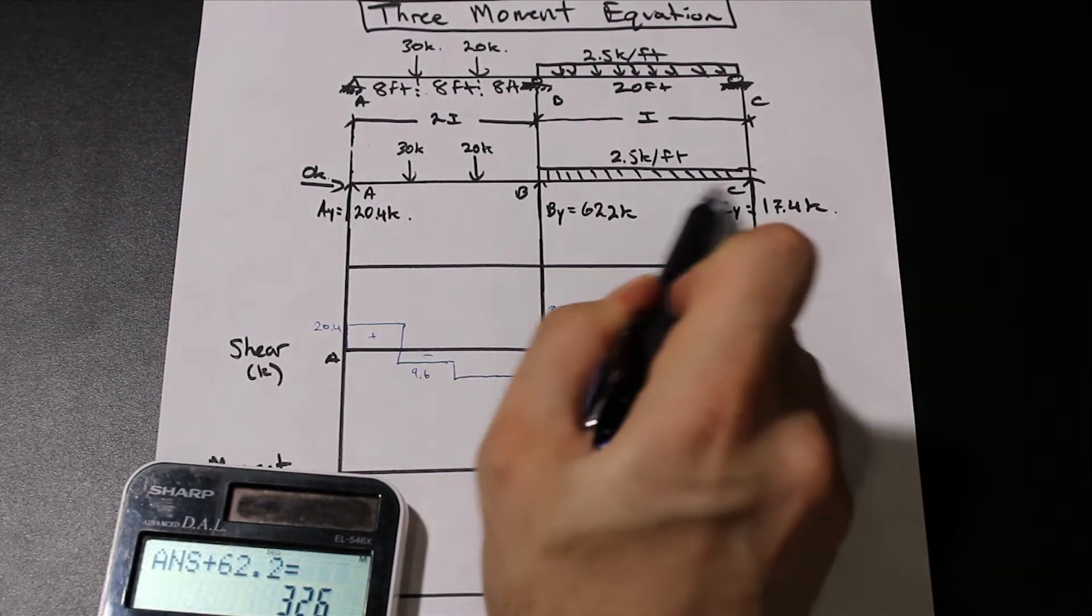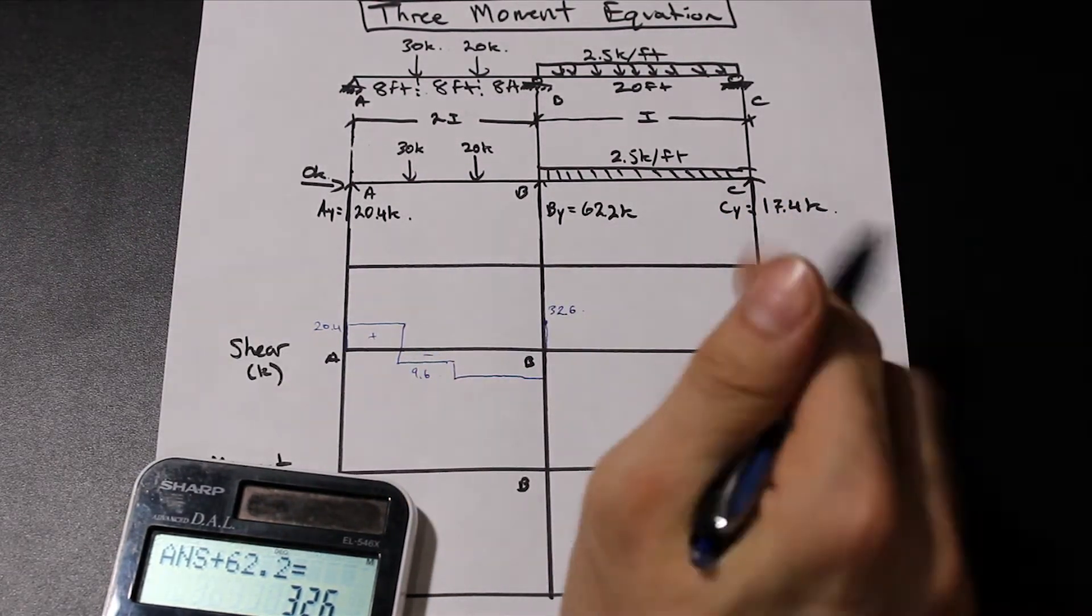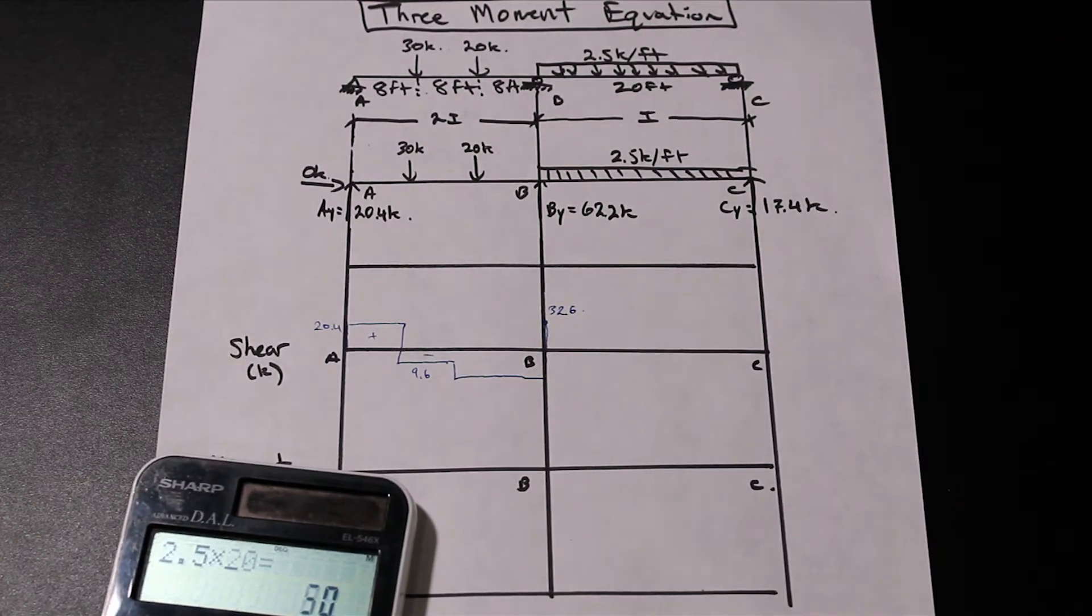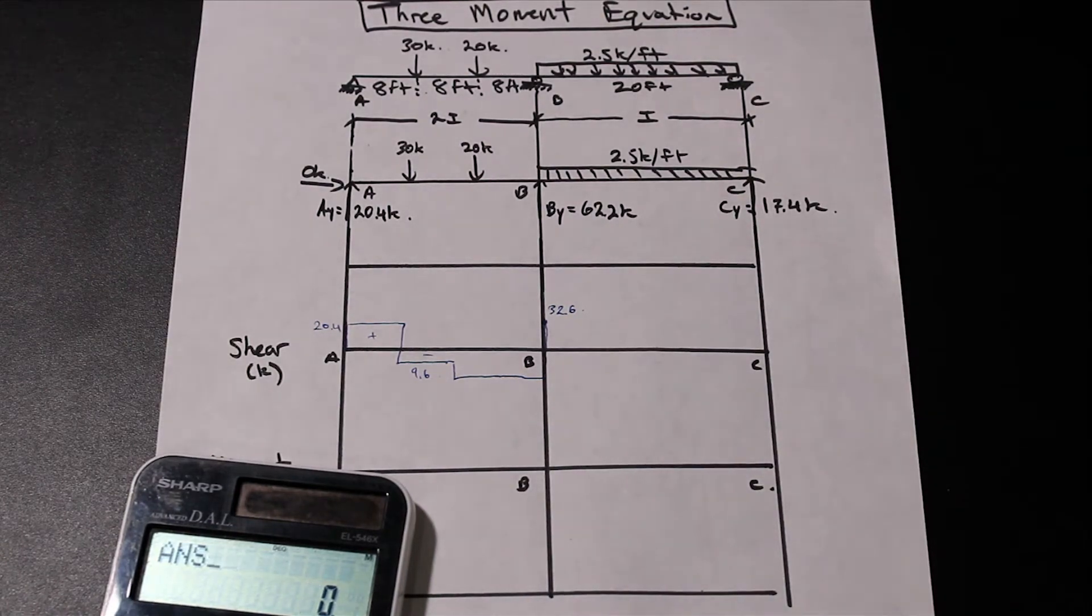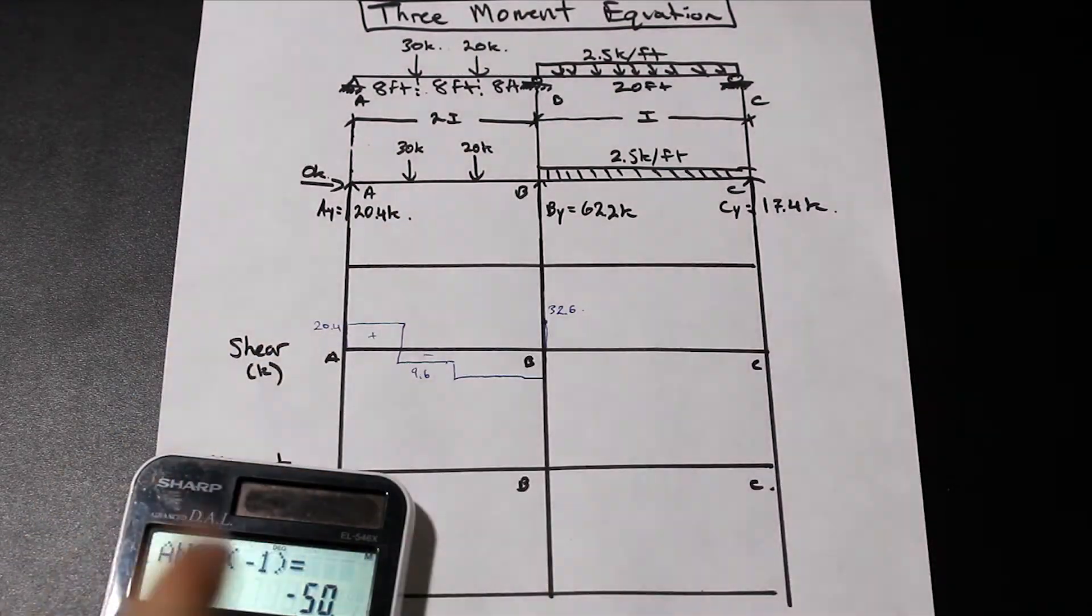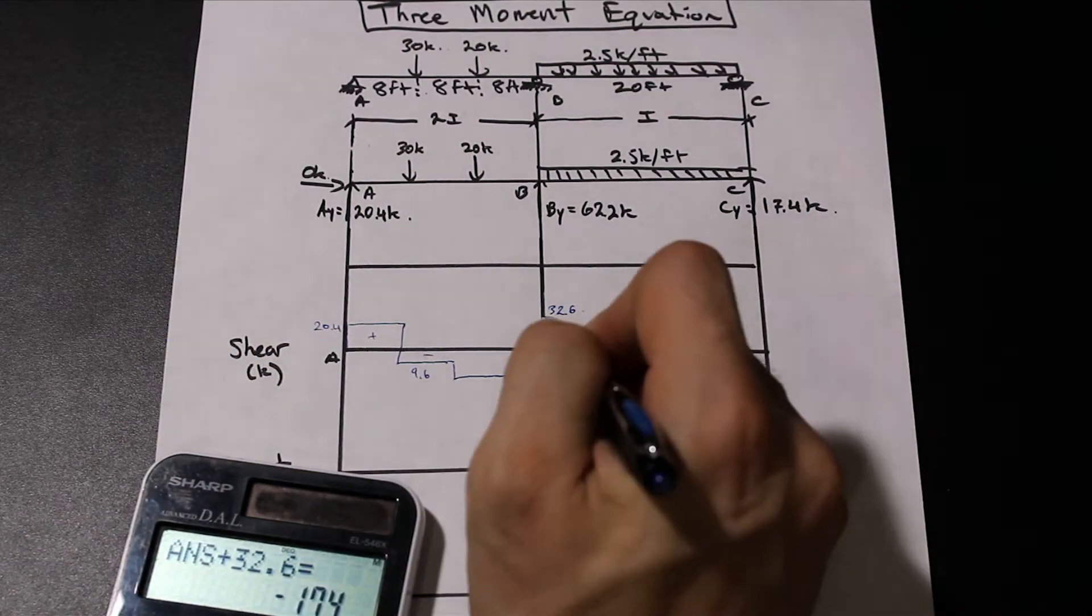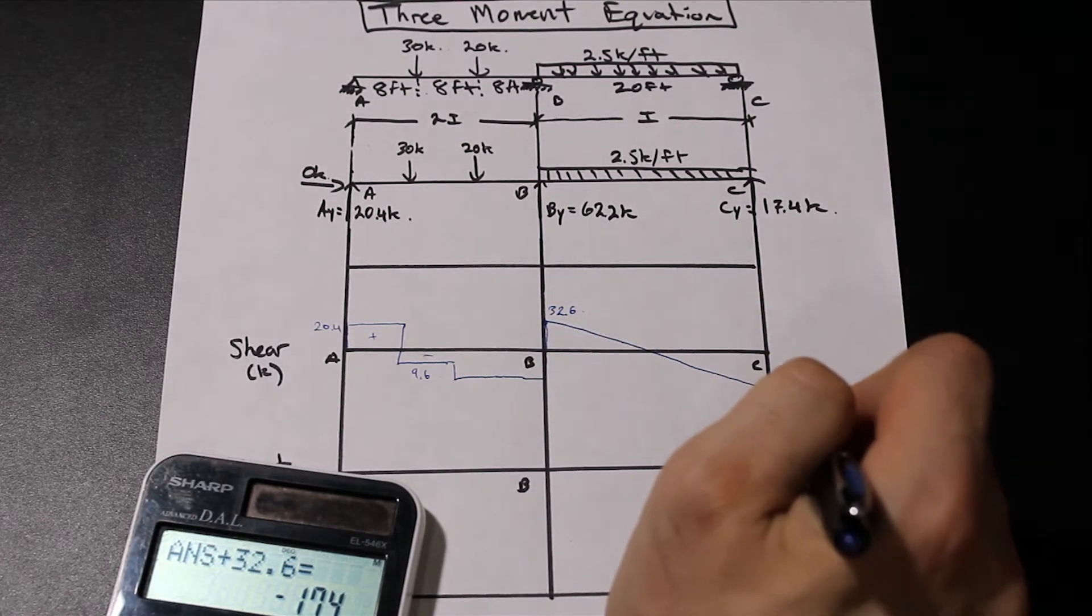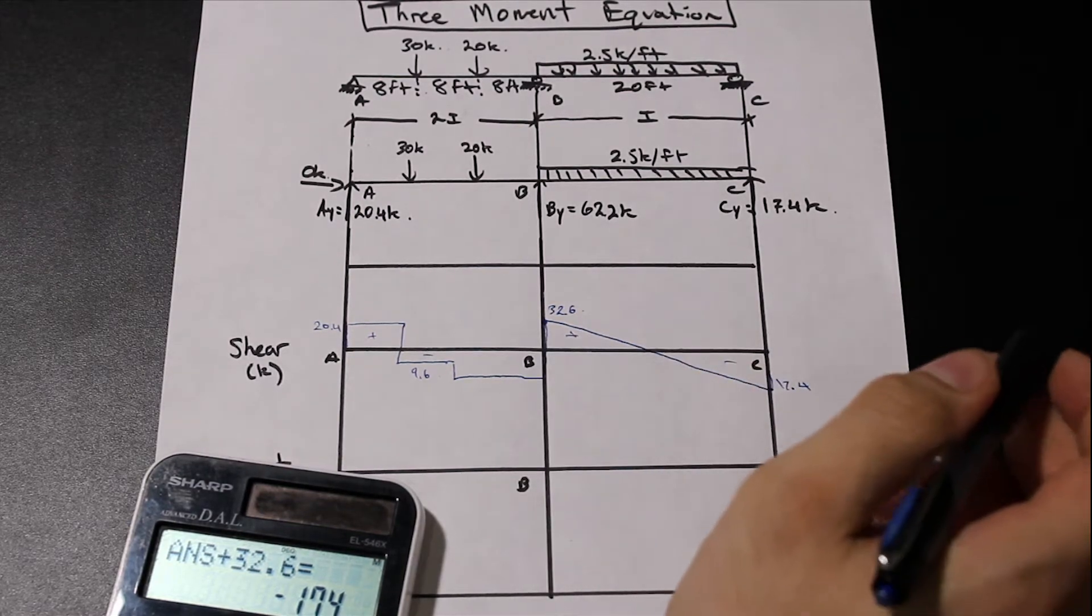That's going to give us 32.6. And now we have a distributed load which is acting downwards. If you don't see the arrows, if you just see straight lines drawn, that's always down. So let's multiply this 2.5 by the distance, which is going to be 50. That's negative because it's down. Let's go ahead and add that to 32.6, the negative number. We're going to get 17.4, and as we can see, we have a 17.4 kip reaction at Cy, so we go back to zero. Cool.